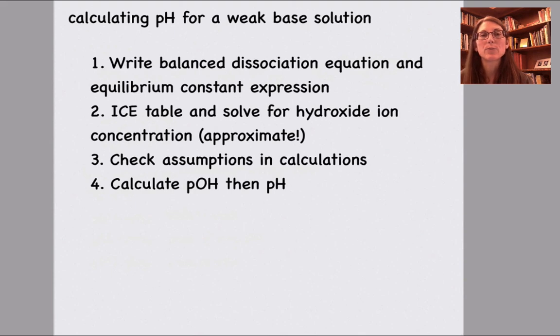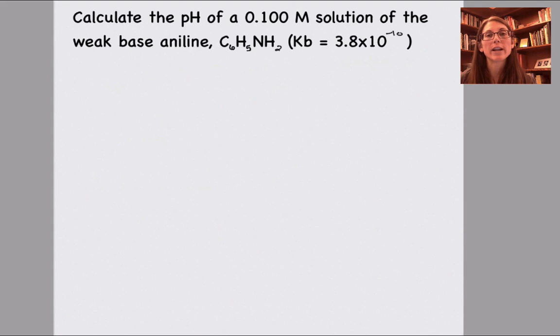We can certainly calculate the pH for a weak base solution. The process is going to be almost the same as for a weak acid, with one little tweak to take into account the fact that we are working with a base. We'll start by writing our balanced dissociation equation and our equilibrium constant expression. We'll make an ICE table that's going to allow us to solve for the hydroxide ion concentration and use approximations as needed. Then that will allow us to calculate the pOH, and from there we can calculate the pH. So if we want to calculate the pH of a 0.1 molar solution of aniline, we will start by writing a dissociation equation and an expression for Kb.